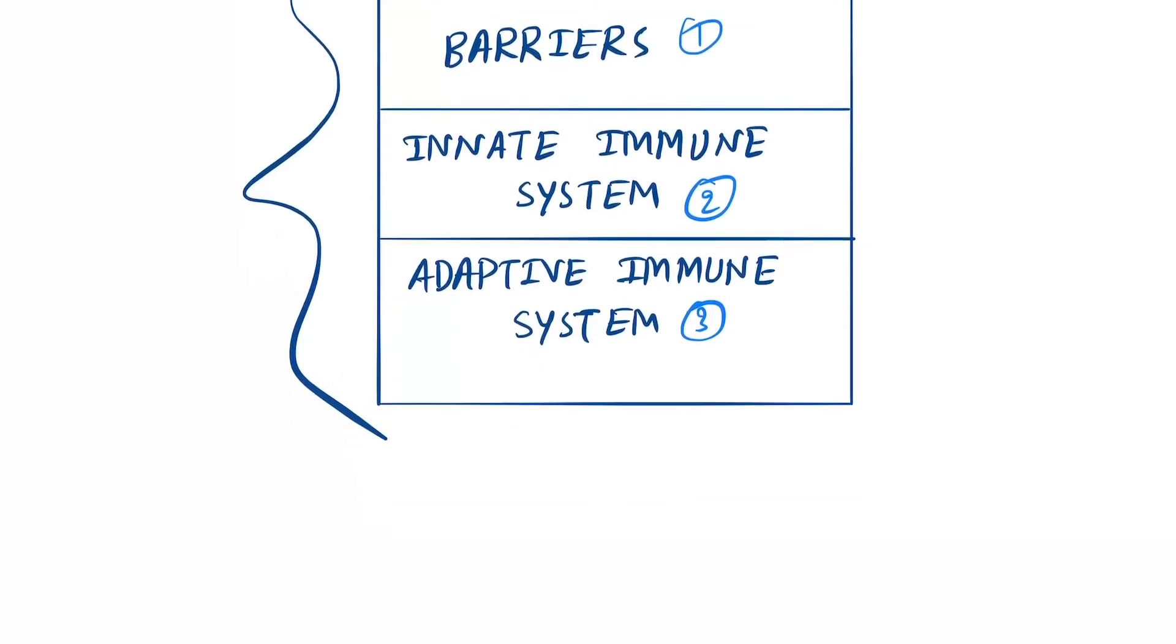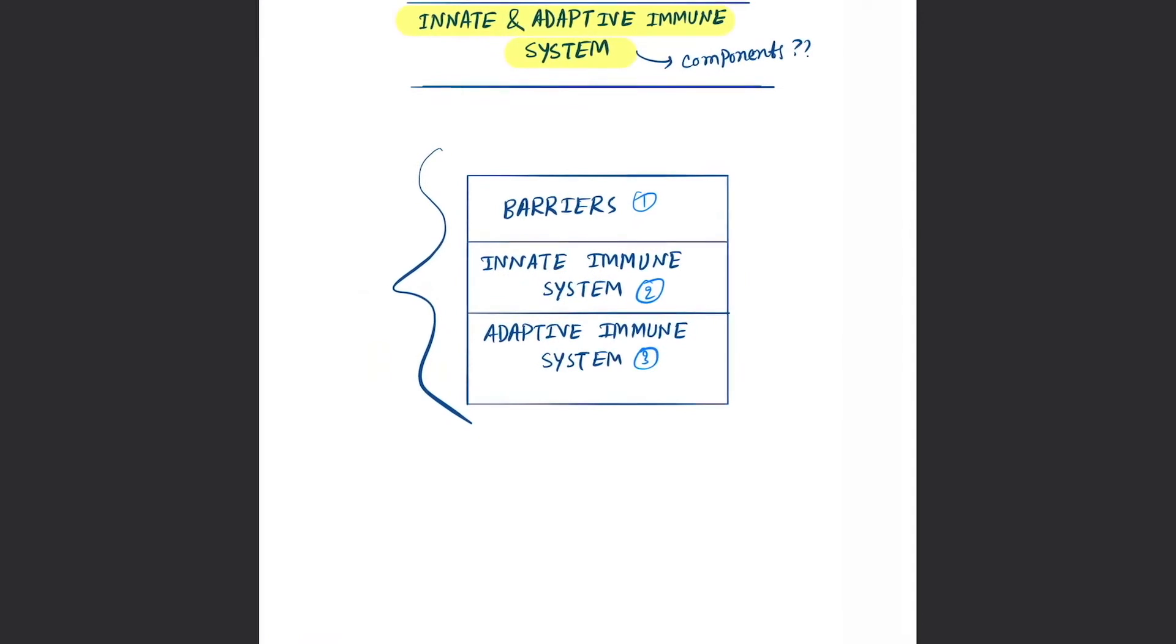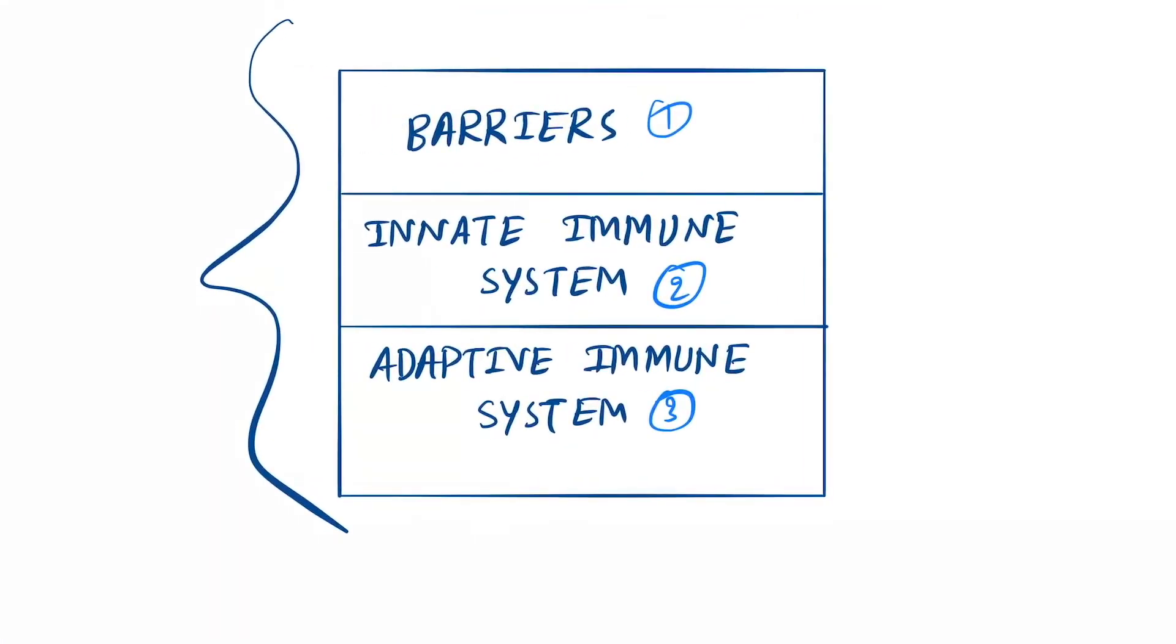Barriers are mainly skin and mucosal membranes. Now let's see the innate and adaptive components. First is the innate immune system, which mainly works by two mechanisms: cellular and humoral.